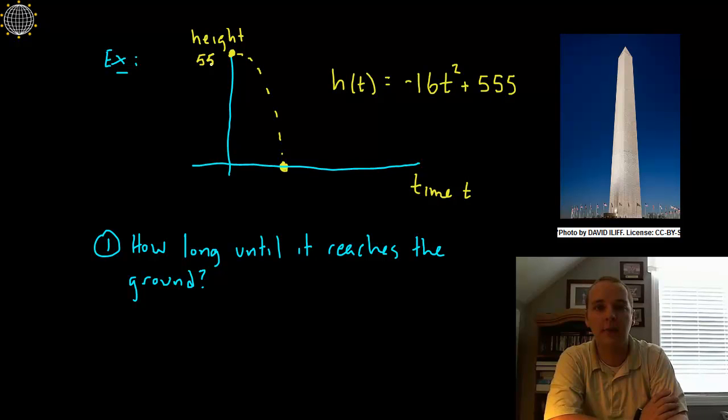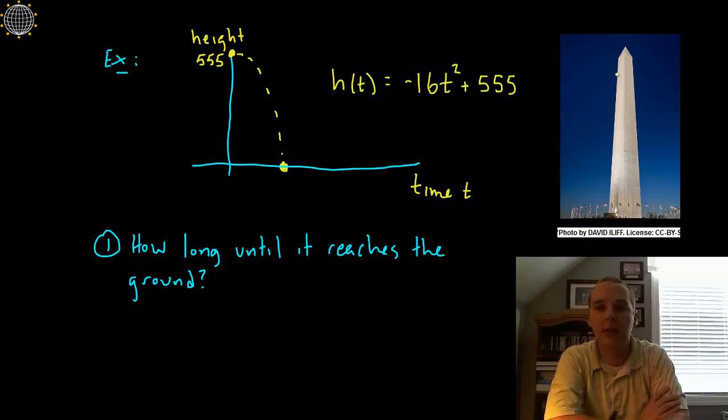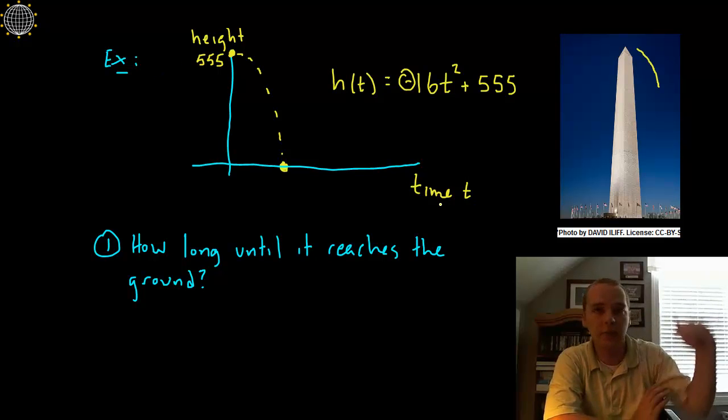You notice at time zero, it has a height of 555 feet off the ground, and then one second later, as it starts to fall, you start subtracting some height away from that 555, and it goes down until it hits the ground. So this is the height, dependent on the time that has fallen.